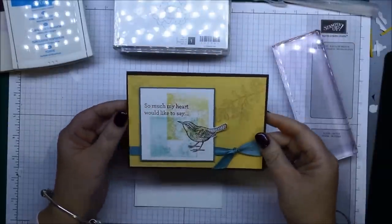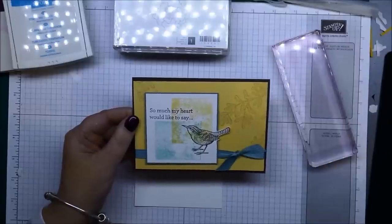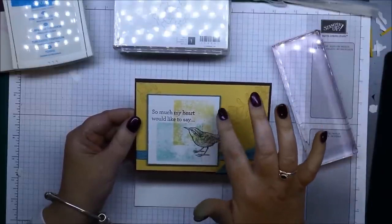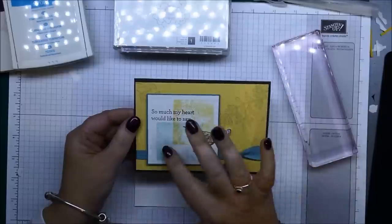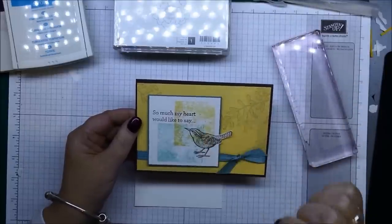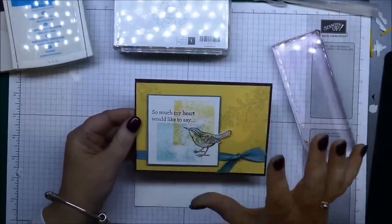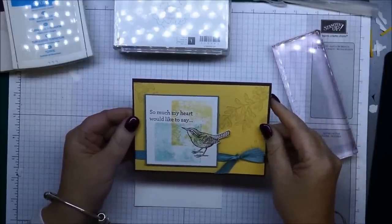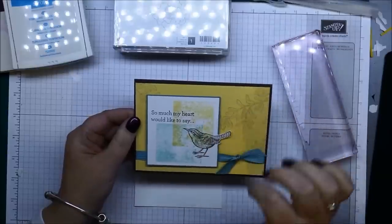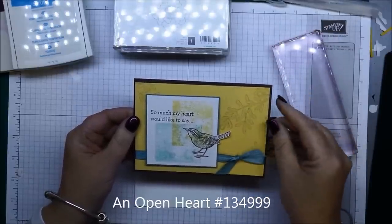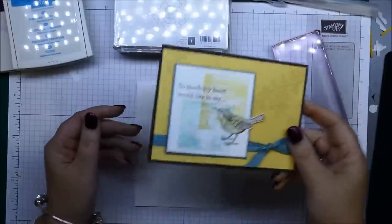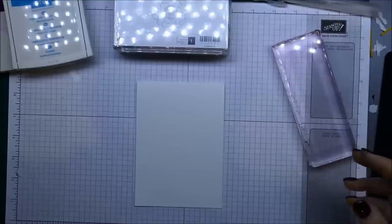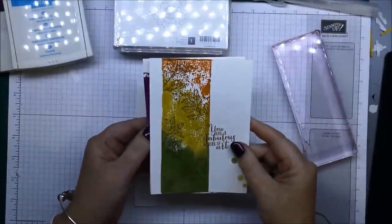This one here is one where I've used one of the smaller blocks and I've inked it up in the Hello Honey and then in the Lost Lagoon. Then I've stamped them off first and then onto my card so they're not as dark and they're just sort of like a background there for you. Then I've used an open heart stamp set which is a new one in the new catalog. Now what I am going to show you today is how to do these watercolor-like backgrounds.